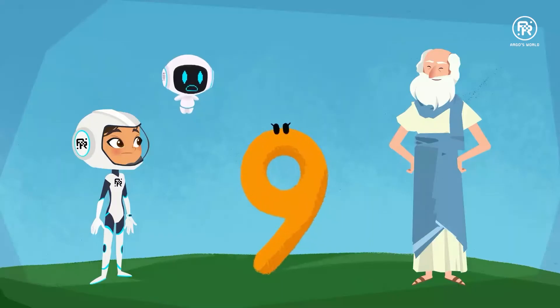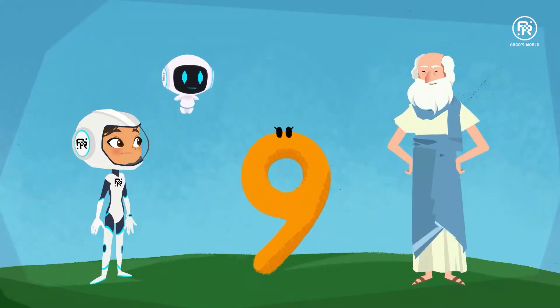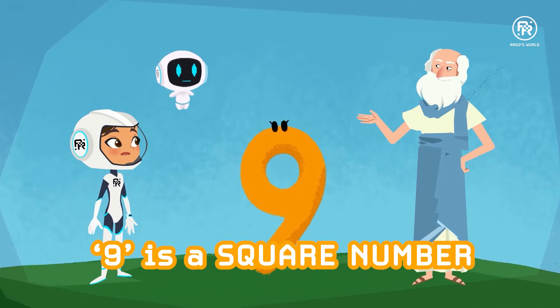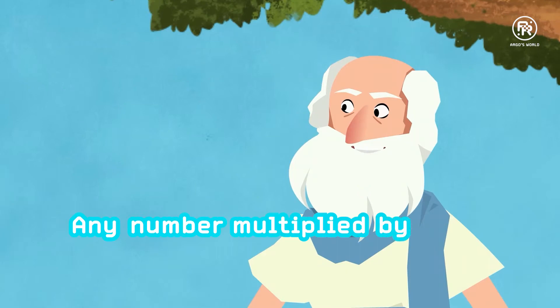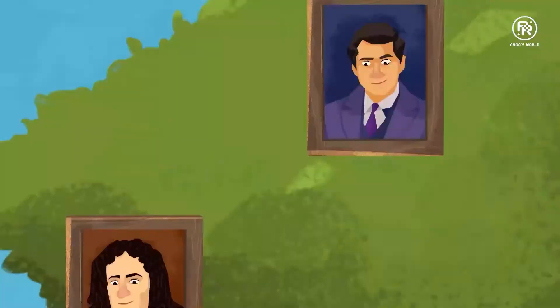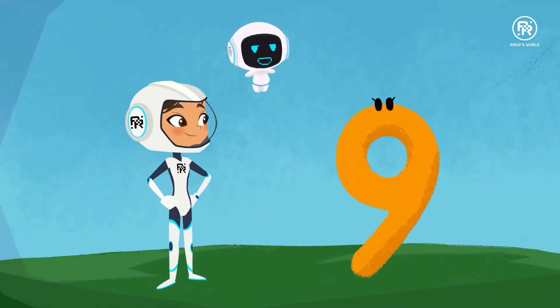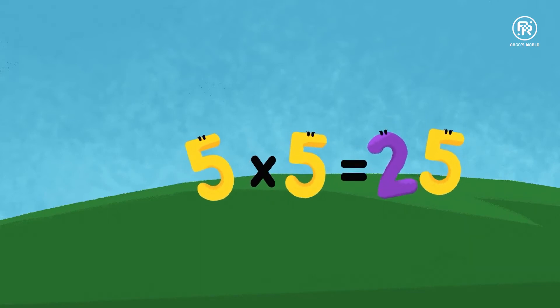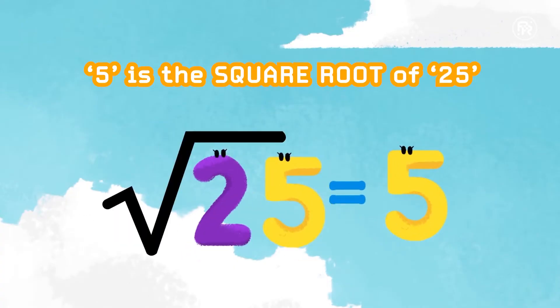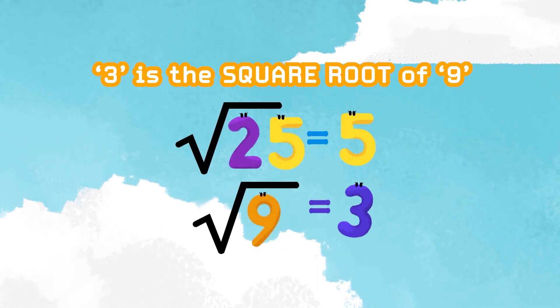Correct. What is special about the nine? Nine is a square number. Any number multiplied by itself results in a square number. So if three multiplies by itself, the product is nine. That 25 is a square number too, because five times five equals 25. Very good. Thus, five is the square root of 25 and three is the square root of nine.